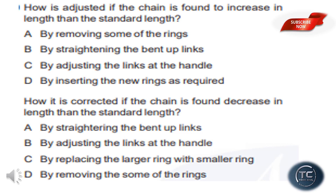How is it corrected if the chain is found to decrease in length less than the standard length? The methods are: by straightening the bent up rings, by adjusting the links at the handle, by replacing the larger ring with the smaller ring, or by removing some of the rings.